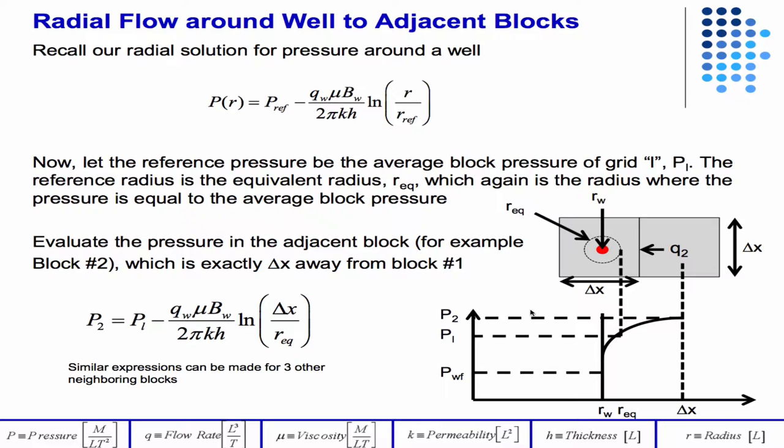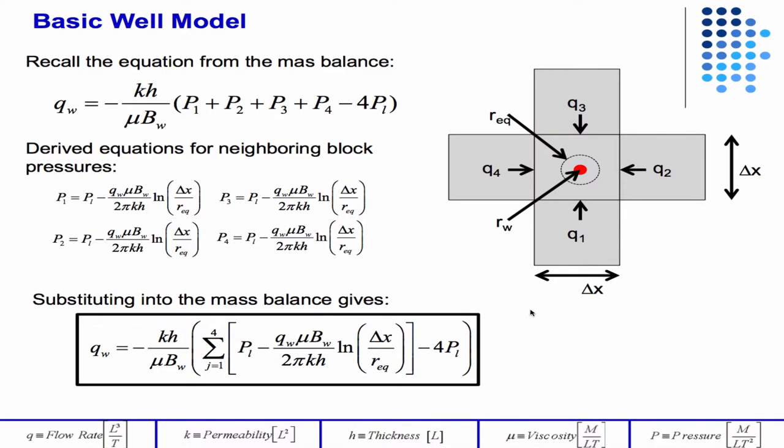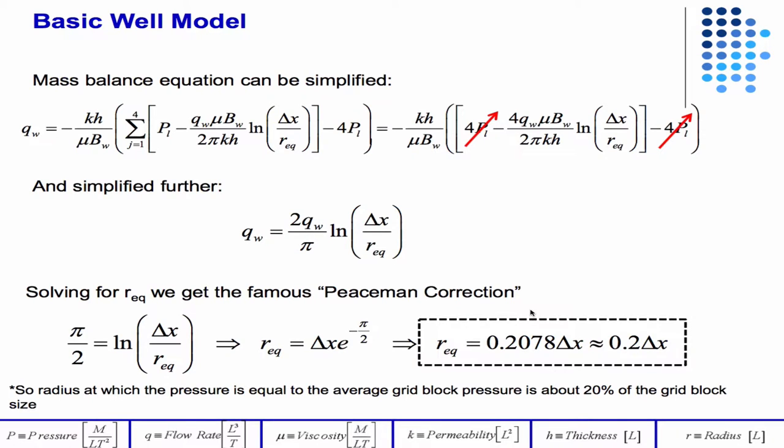Which have the pressures P1, P2, P3, P4, and so we develop four equations that look like this, and just identical relations for P1, P2, P3, P4. And so then if we plug that back into our mass balance equation that we just solved for, we get this, and we can make some simplifications. The four PLs cancel, and ultimately we get an equation that we can solve for REQ. So the solution to all of that turns out to be that REQ is equal to delta X E to the minus pi over 2, which is equal to 0.2078 delta X.